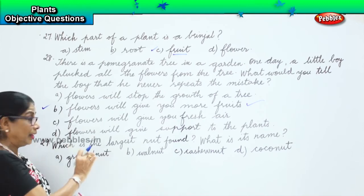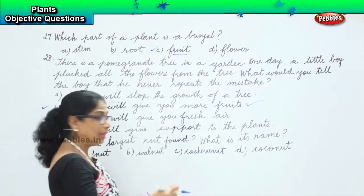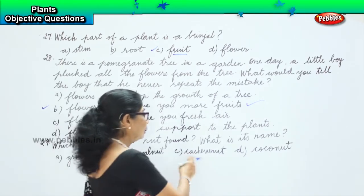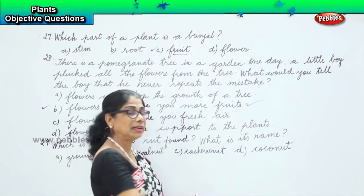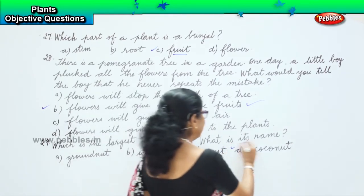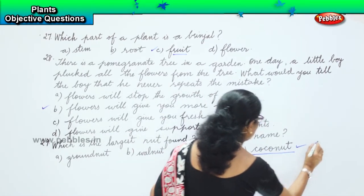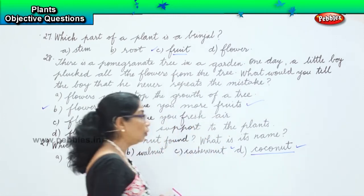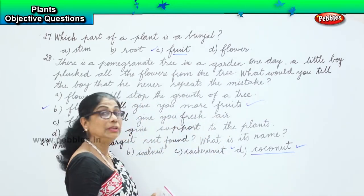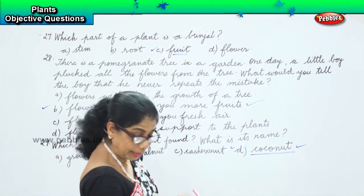You are given four options — which is the largest nut found? Groundnut is very tiny, walnut is a little bigger, cashew nut certainly not. So the answer is option D — the coconut is the largest nut found.